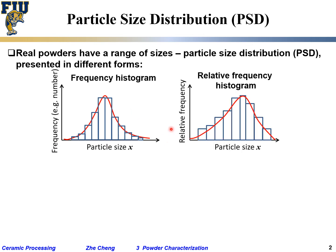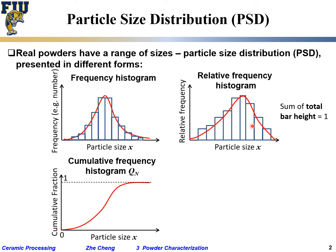From the frequency histogram, you can have a relative frequency histogram where the total bar heights add up to one. Then we can have a cumulative frequency histogram, which means up to a certain size, I give it a percentage—whatever is smaller than a certain size gets a cumulative percentage.